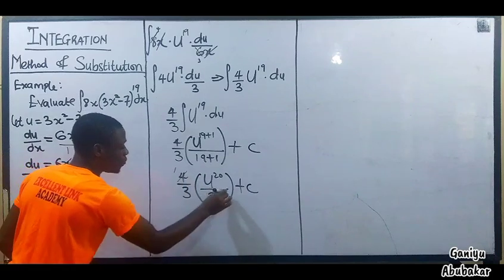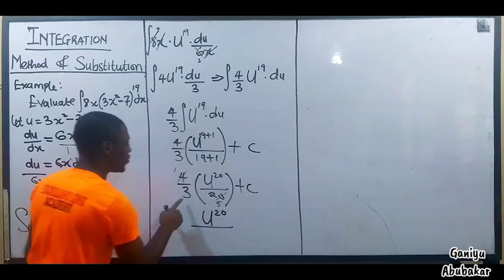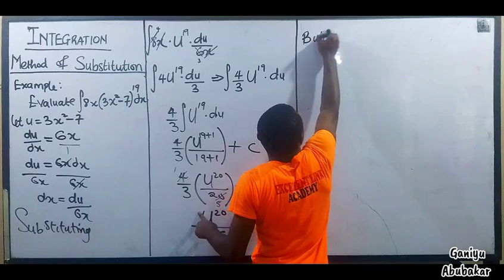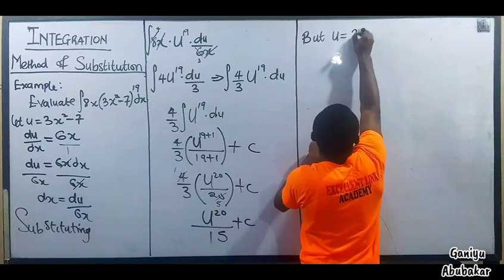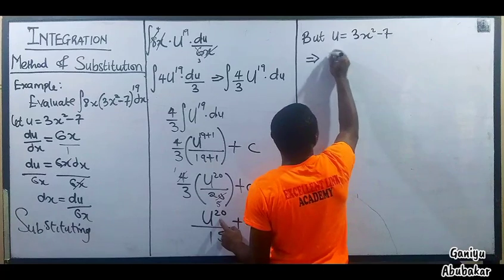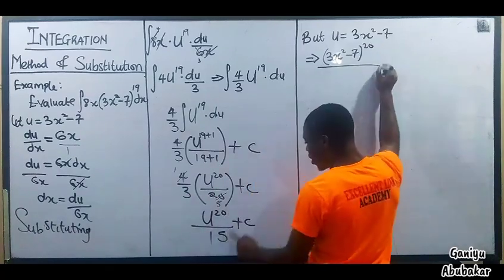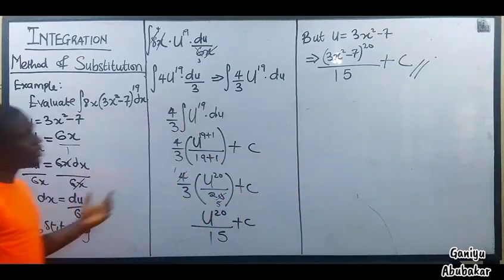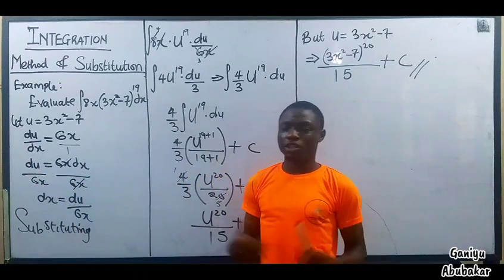Simplifying: 4 over 3 times 1 over 20. Four and 20 cancel — 4 goes into 20 five times — leaving 1 over 15. So I have u to the power 20 over 15, plus c. But u was equal to 3x² - 7. Substituting back, the final answer is (3x² - 7) to the power 20, all over 15, plus c.